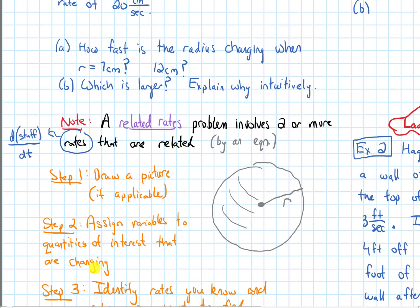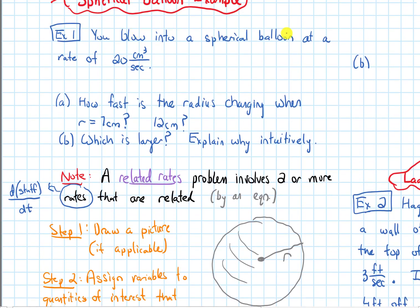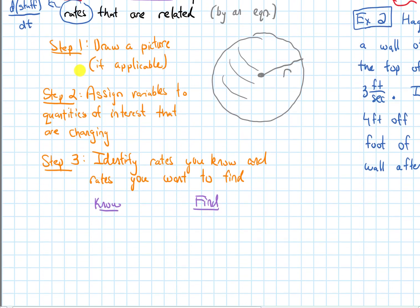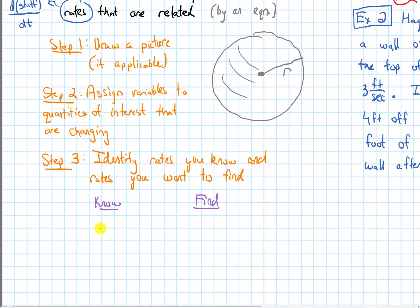This problem tells us the rate at which we are blowing air into this balloon. If I look at the units, centimeters cubed per second, this is a unit of volume on top - it's how much volume is being added per second. What I know is the rate of change of the volume. I would write that as dV/dt, and dV/dt is 20. This represents the rate of change of the volume. That's what's given to us in the problem.